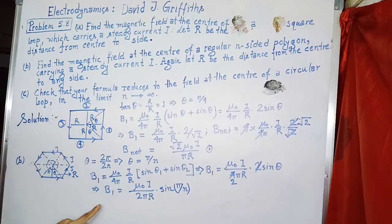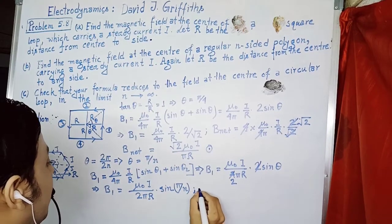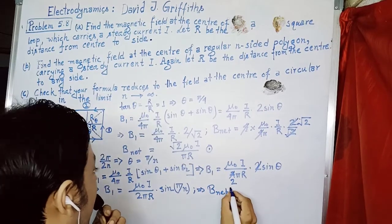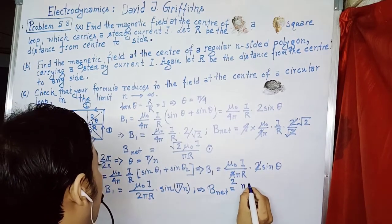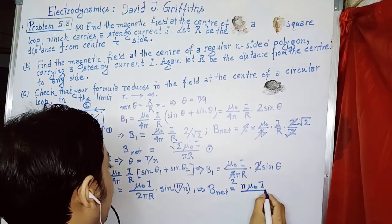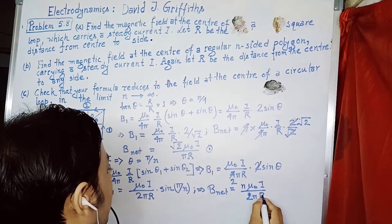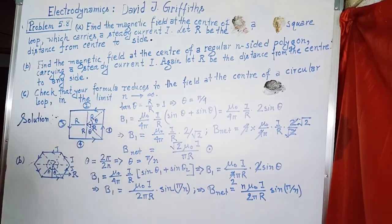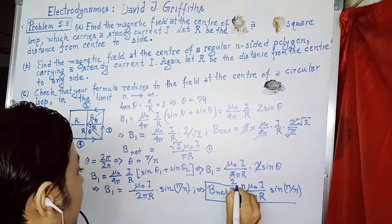This magnitude is the magnetic field due to one side of the polygon. Considering all n sides, the net magnetic field at the center of the polygon is n times the field from one side: B_net = n μ₀I/(2πR) · sin(π/n). This is the net magnetic field at the center of the regular n-sided polygon.